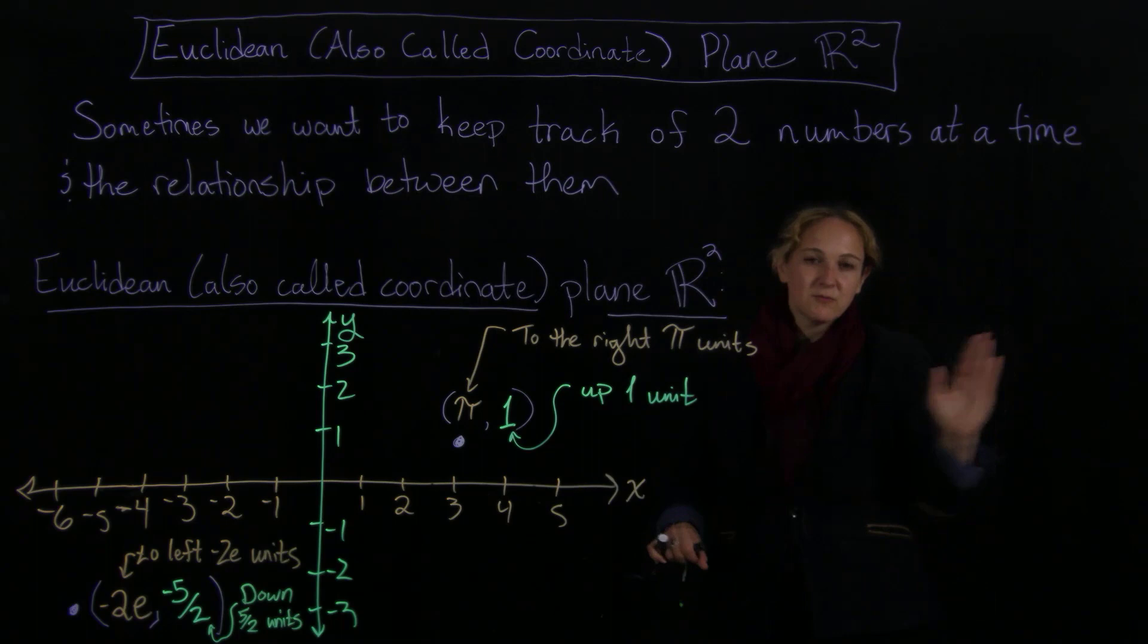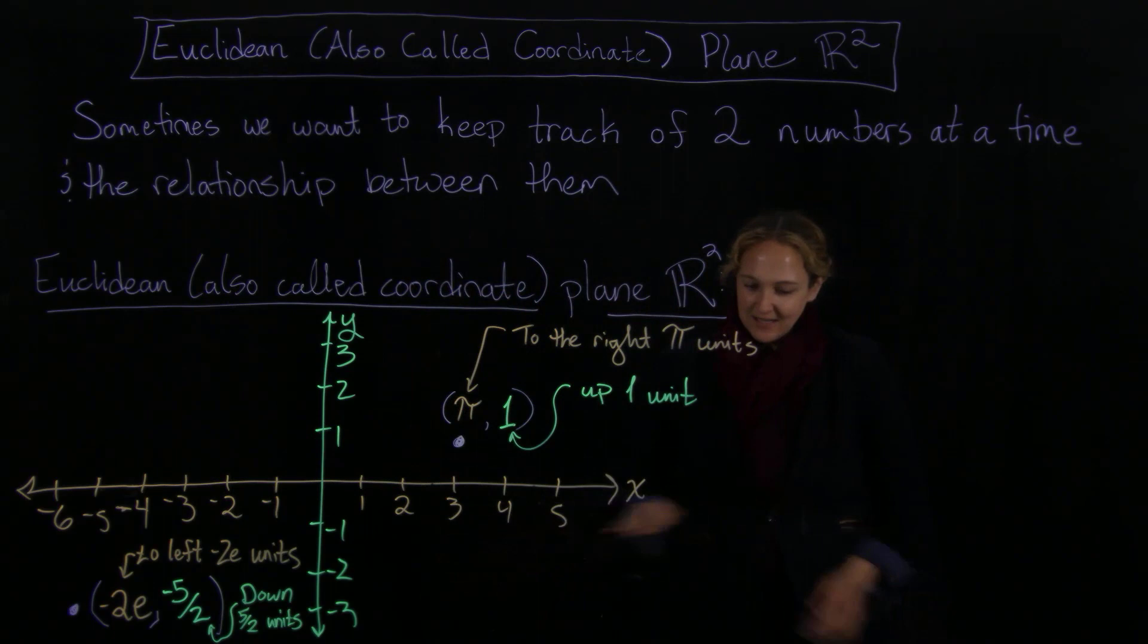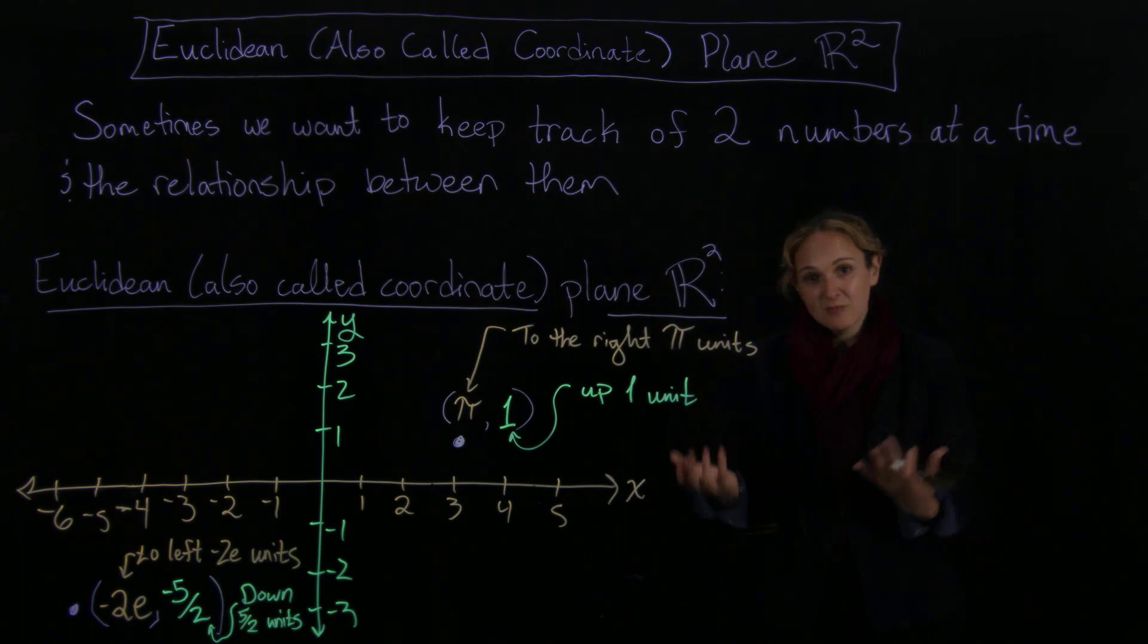So first coordinate, left or right from the origin. Second coordinate, up or down from the origin. Right is positive, left is negative, up is positive, down is negative. So here's something that's kind of important that shows up in places, particularly when you're looking at graphs of functions.